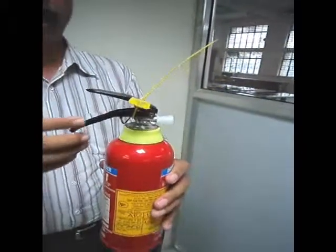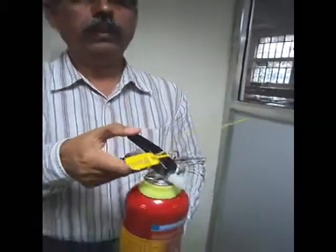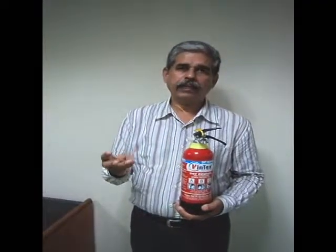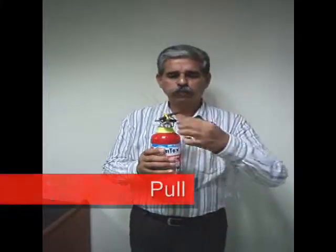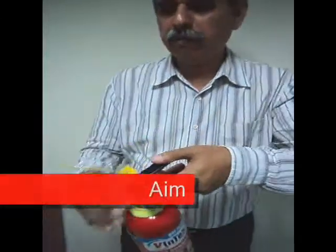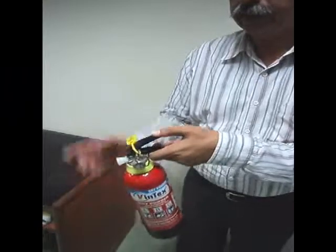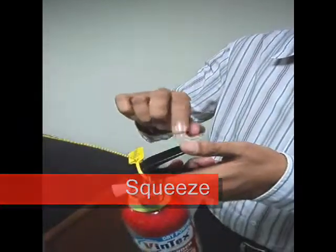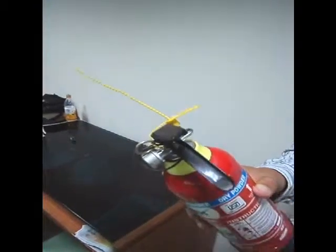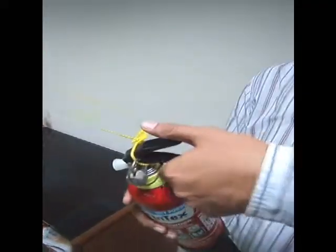How to use it? The formula for using the fire extinguisher is PASS. P is for Pull the pin — this is the safety pin. A is for Aim — aim at the base of the fire. S is for Squeeze — squeeze the lever, which will actuate and start pressurizing so the powder comes out from the horn. The last S is for Sweep.